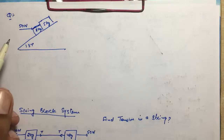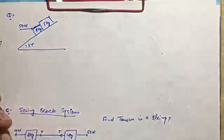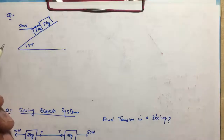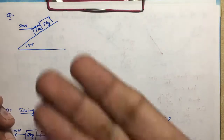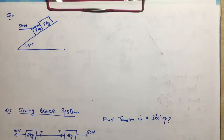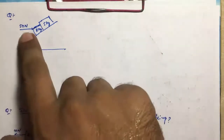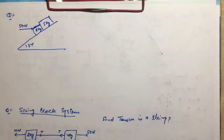But this case is slightly different. Here there is another force of 50 N. They are not falling with G sin theta. In the previous case both were falling with G sin theta, but in this case they are not falling with G sin theta — their acceleration is not G sin theta, because some force is acting in the opposite direction. So we have to solve this.